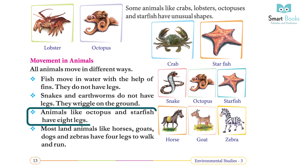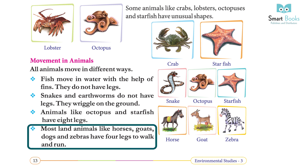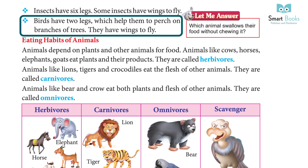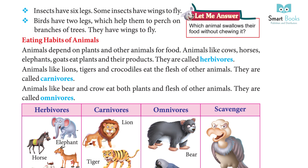Animals like octopus and starfish have eight legs. Most land animals like horses, goats, dogs, and zebras have four legs to walk and run. Insects have six legs. Some insects have wings to fly. Birds have two legs which help them to perch on branches of trees; they also have wings to fly.